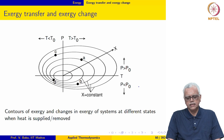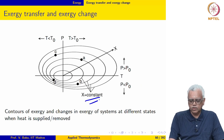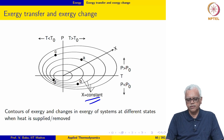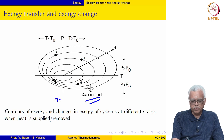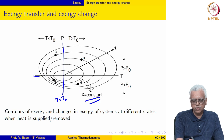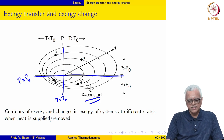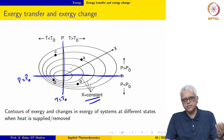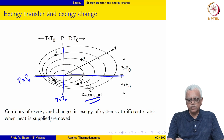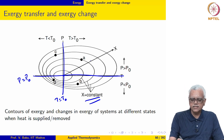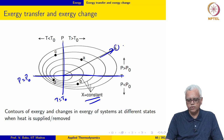Here, contours of exergy x equal to constant are plotted on a P-T coordinate system. Notice that the line corresponding to temperature T equal to T₀ is the ambient temperature line, and the horizontal line corresponds to P equal to P₀. The origin is the ambient state itself, P equal to P₀ and T equal to T₀. So x equals zero at the origin, and since exergy is positive, it increases in the radially outward direction as shown here.